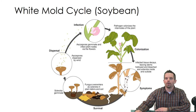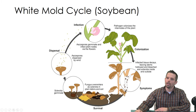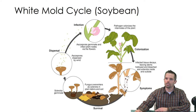First, I want to talk about the white mold cycle on soybean. We'll start at the end of one season and beginning of the next, where we have sclerotia, which are hardened survival structures. These sclerotia are fungal material formed on last season's plants. Once the plant is killed, you see the formation of even hundreds of these sclerotia on a single plant. When a combine goes through the field, it knocks the sclerotia off onto the soil surface where they end up being lightly incorporated in the upper layer.